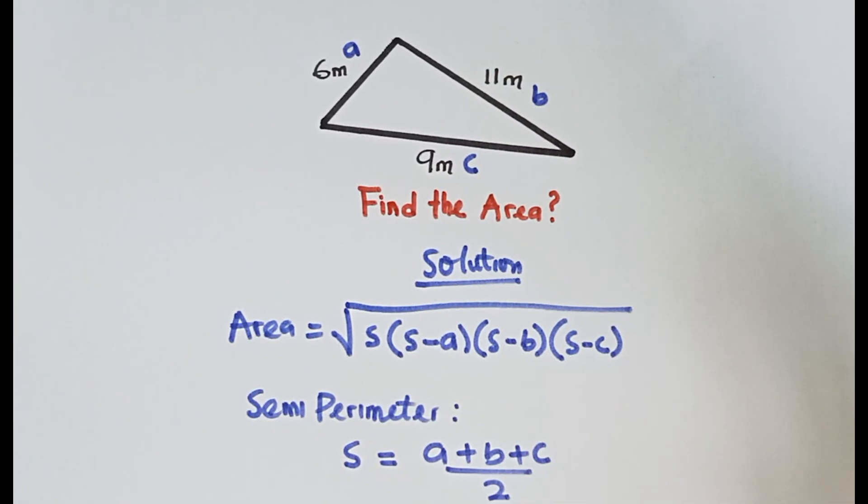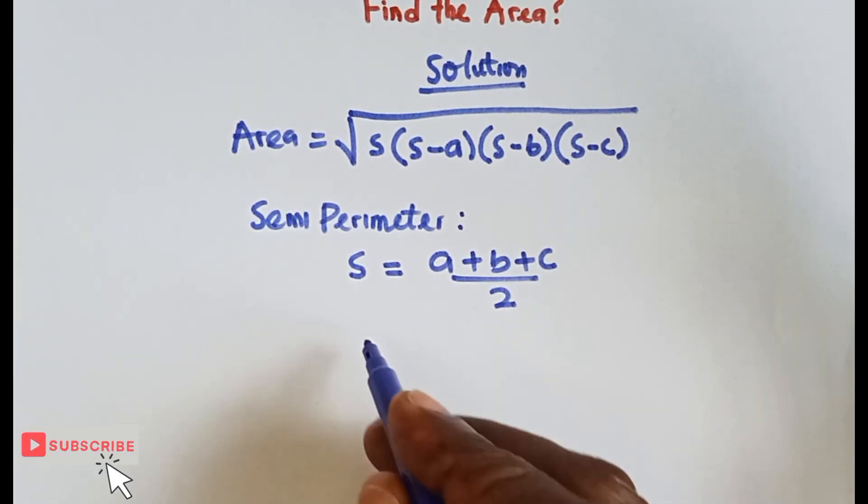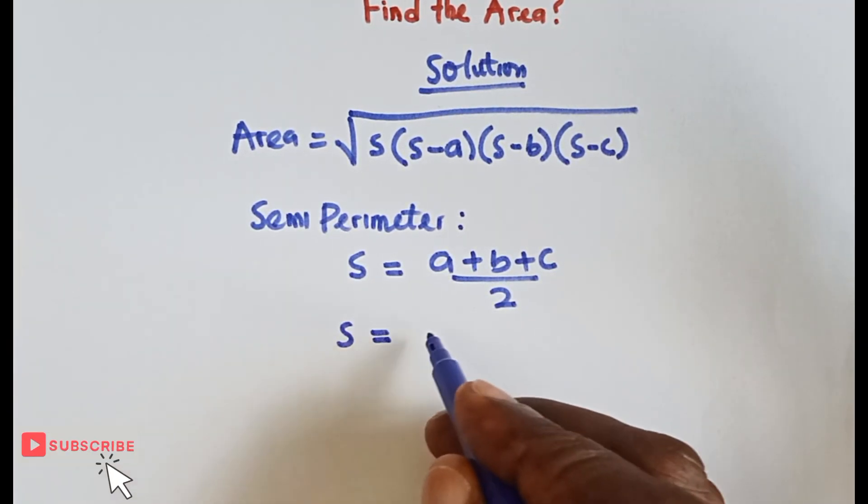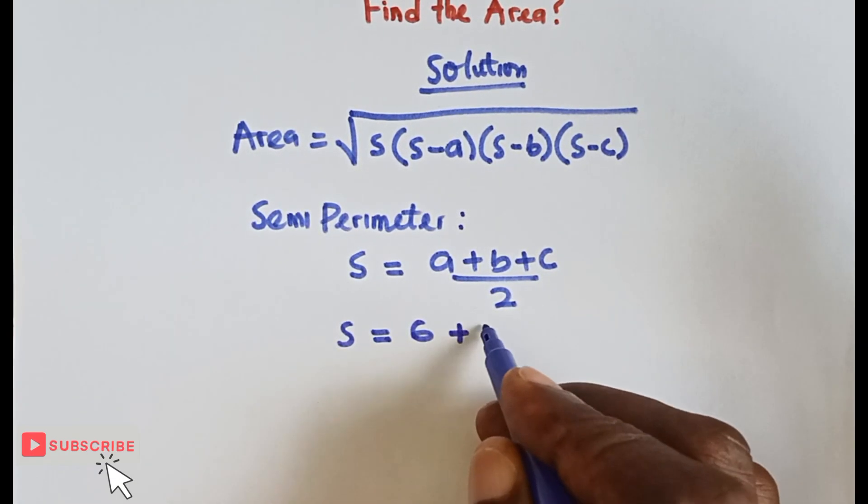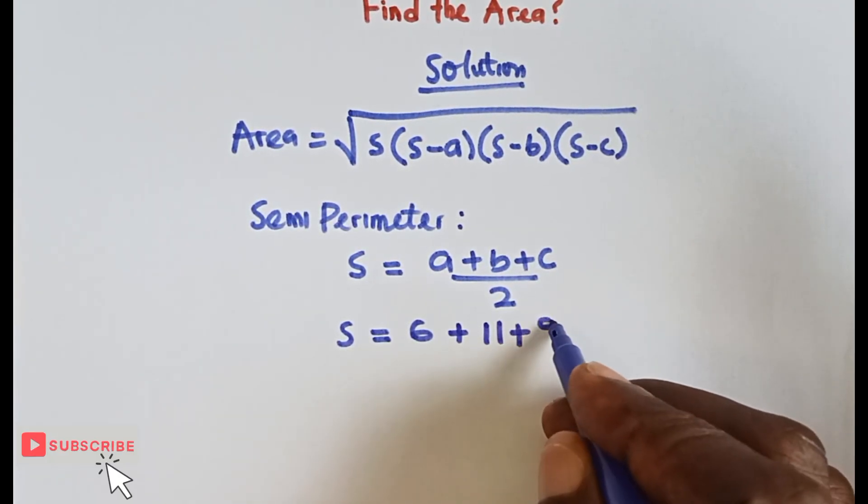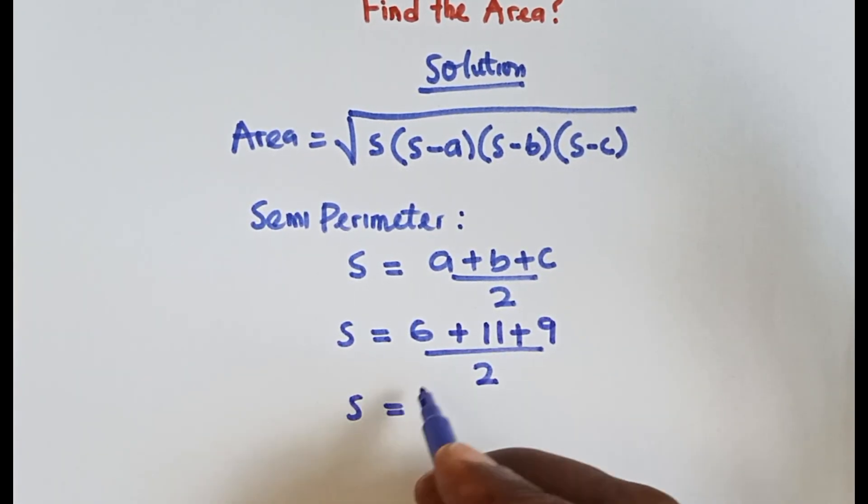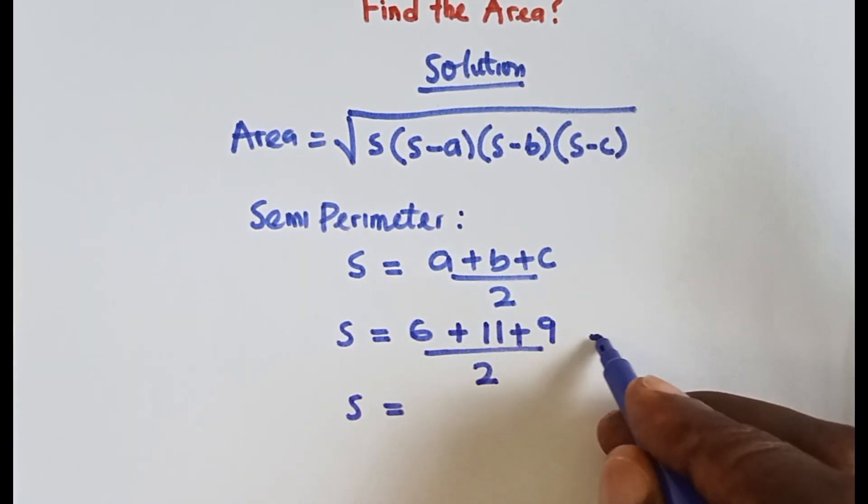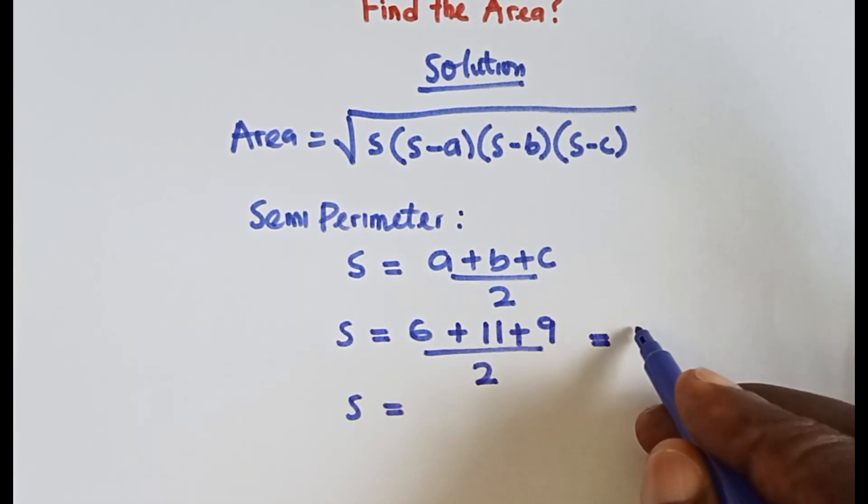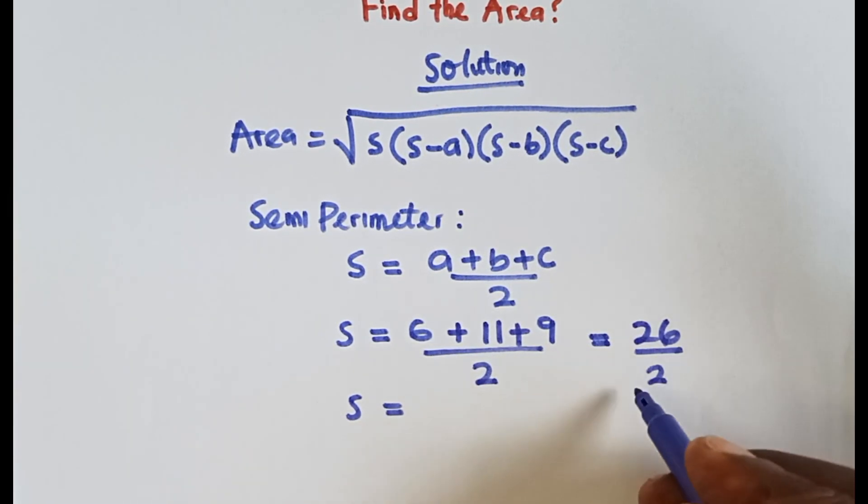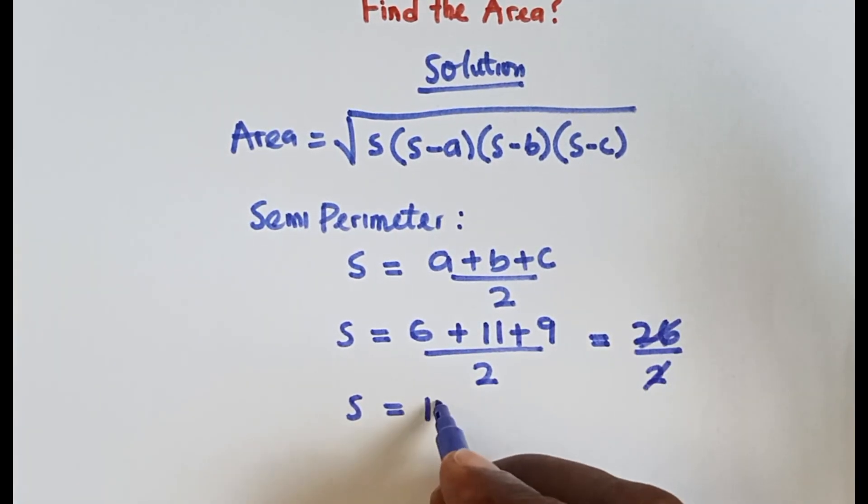Now let's continue. Our s equals a is 6, b is 11, and c is 9, everything divided by 2. So we have 6 plus 11 plus 9 to be 26 over 2, then 26 divided by 2 is 13. It means our s equals 13.